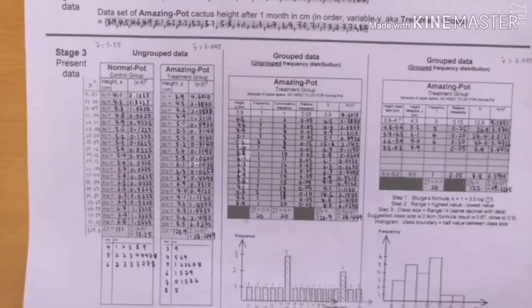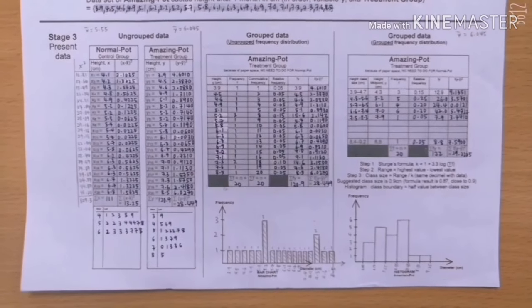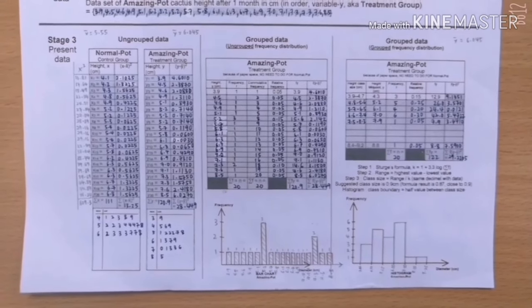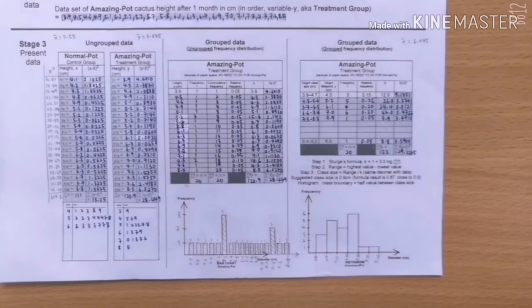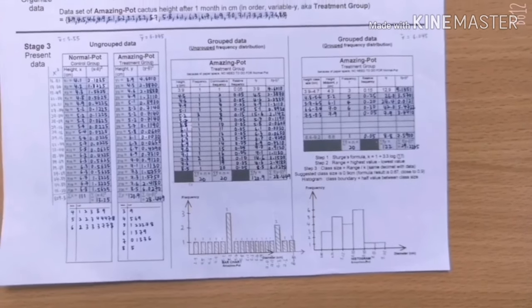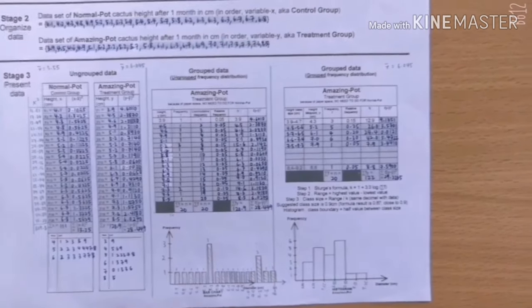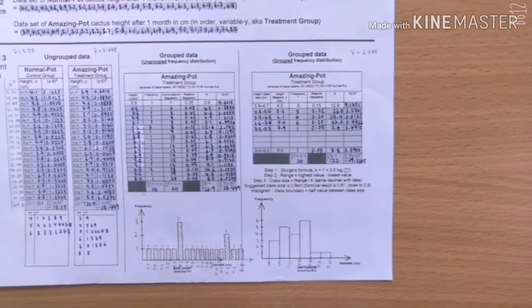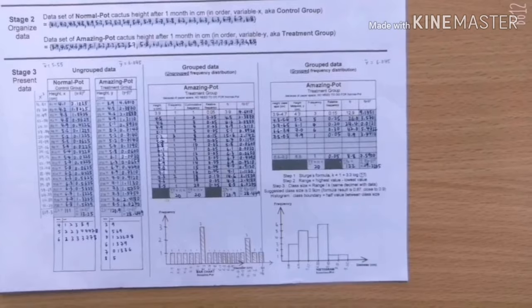For stage three, there's ungrouped data for normal pot and amazing pot. And also there's stem and leaf. And group data of ungrouped frequency distribution of amazing pot where we do it in bar chart. And the group data of group frequency distribution of amazing pot where we do it in the terms of histogram because it is continuous data.